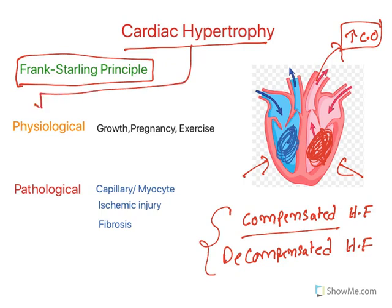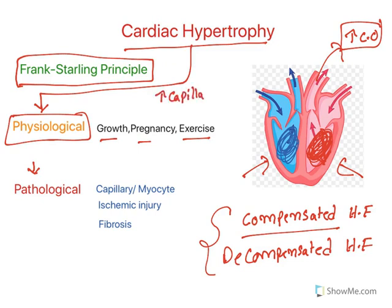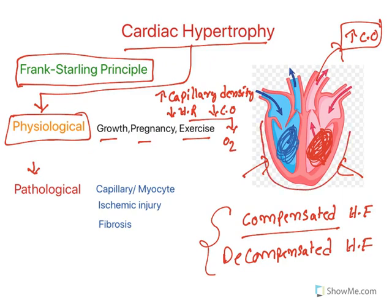Cardiac hypertrophy can be physiological or pathological. Physiological hypertrophy occurs during growth spurts in pregnancy or when people exercise — it is very common in athletes. In physiological hypertrophy, there is increased capillary density, meaning excess blood supply to the heart. At the same time, heart rate and cardiac output are decreased, both of which reduce oxygen demand. So physiological hypertrophy does not cause further damage.